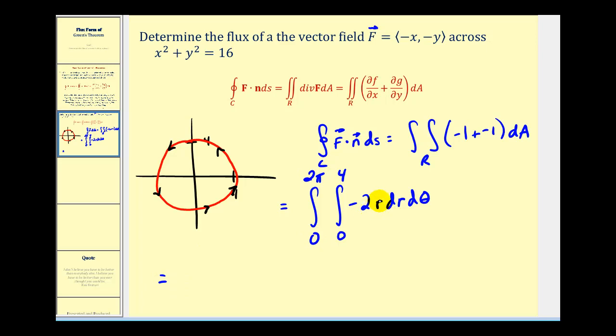So we're going to have negative two times R squared over two, just negative R squared. It's going to give us negative sixteen minus zero. It's going to be negative sixteen.